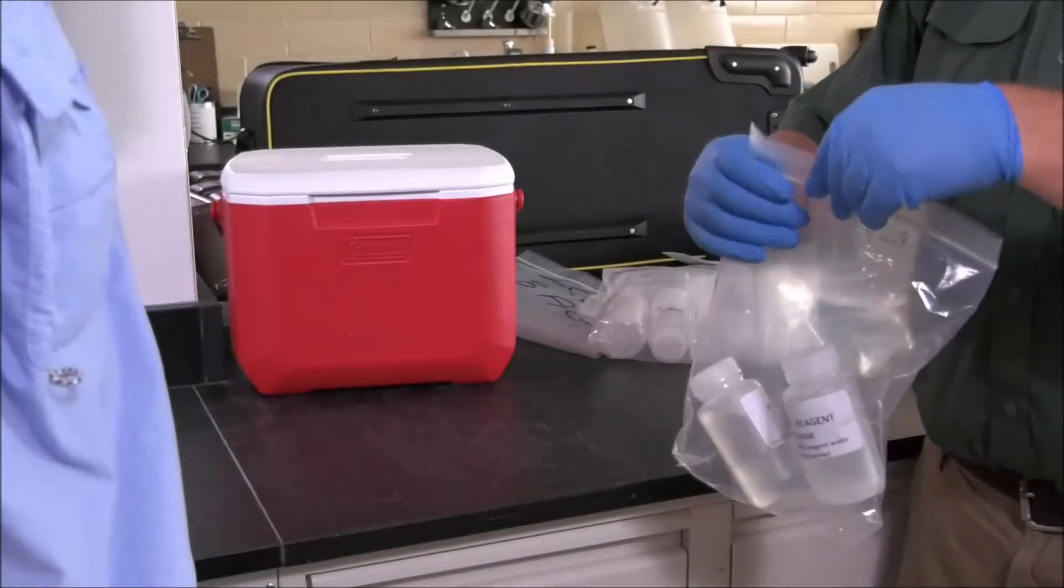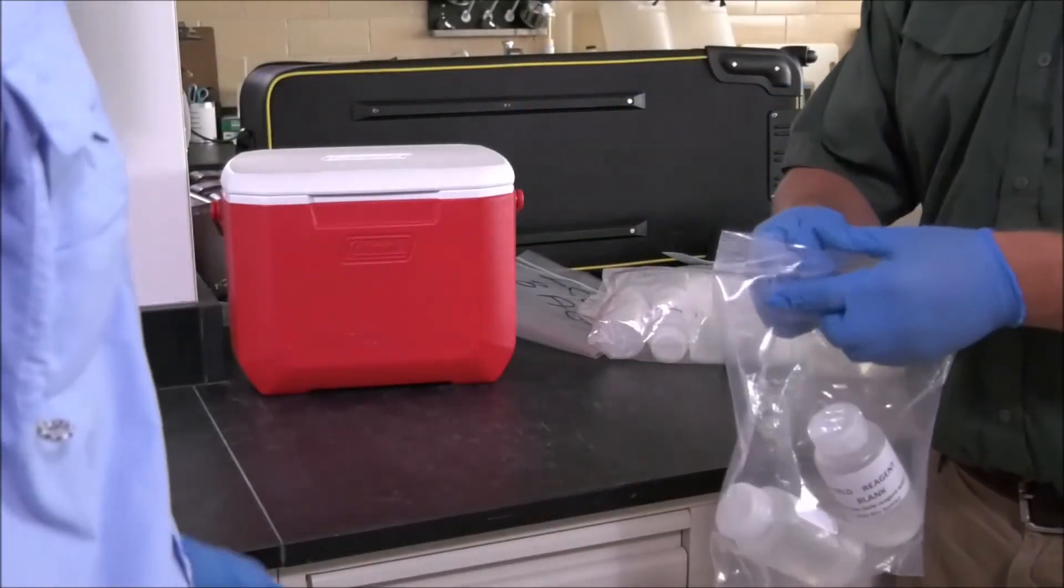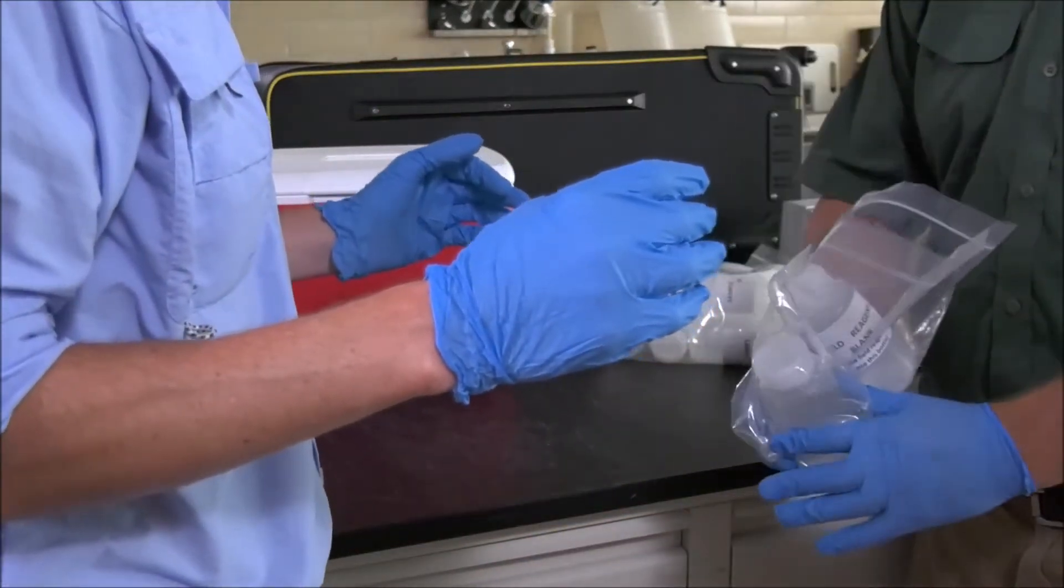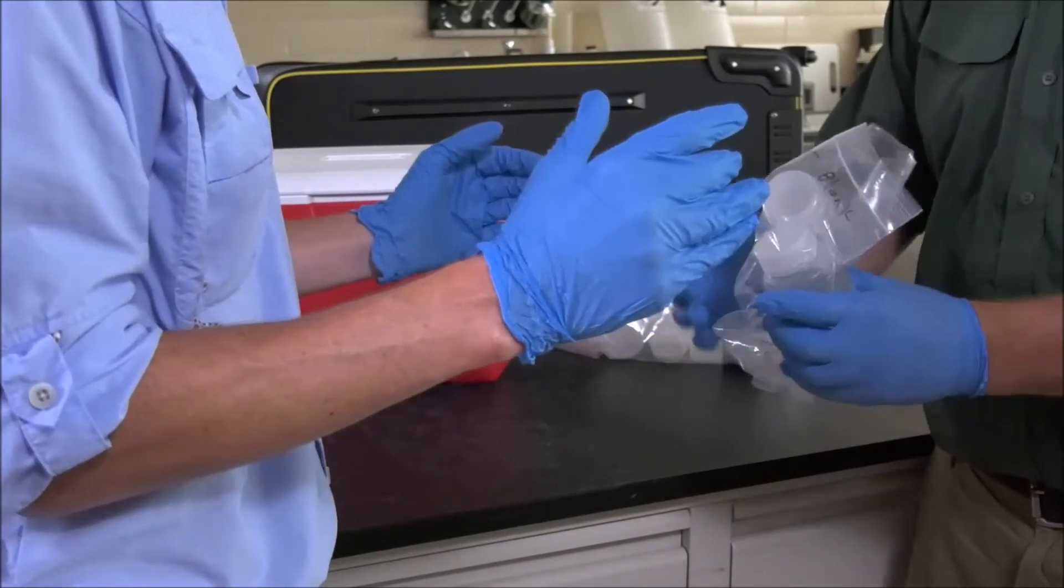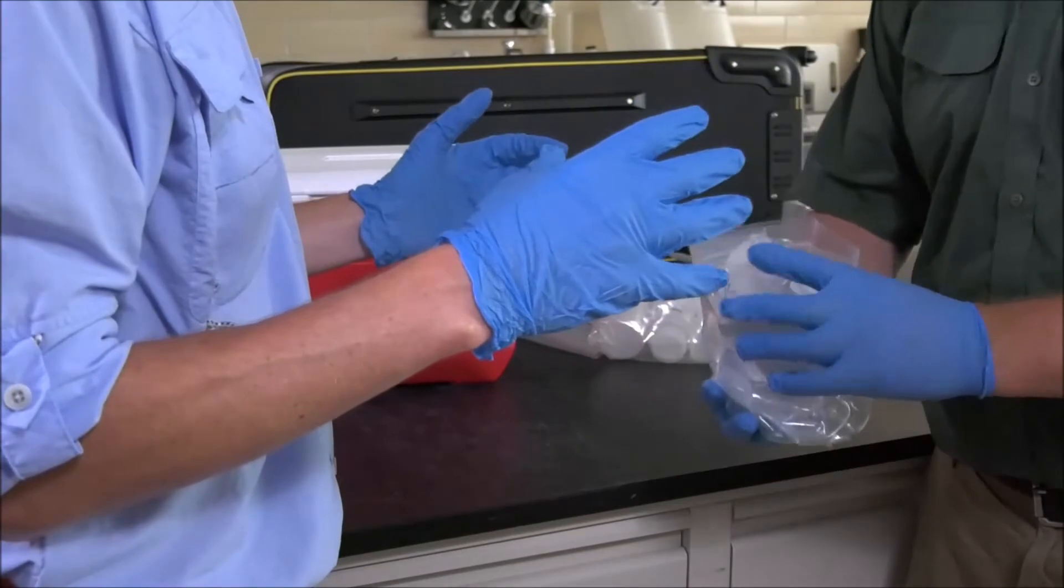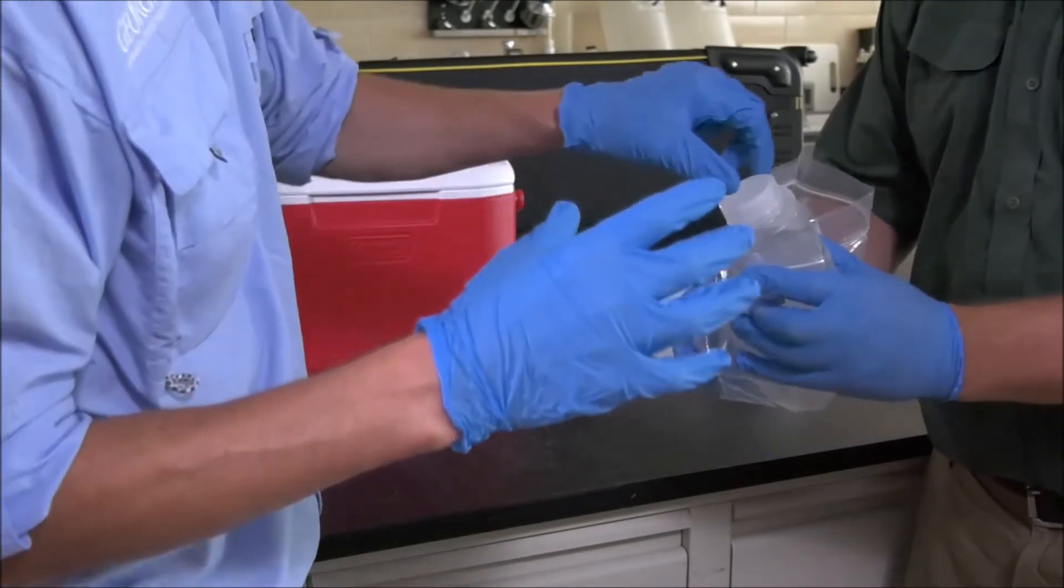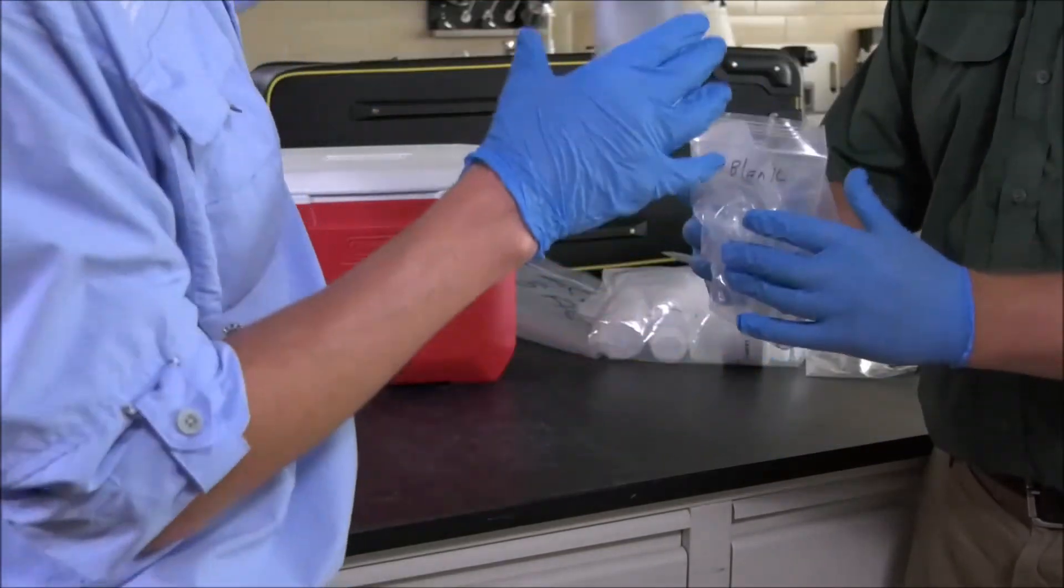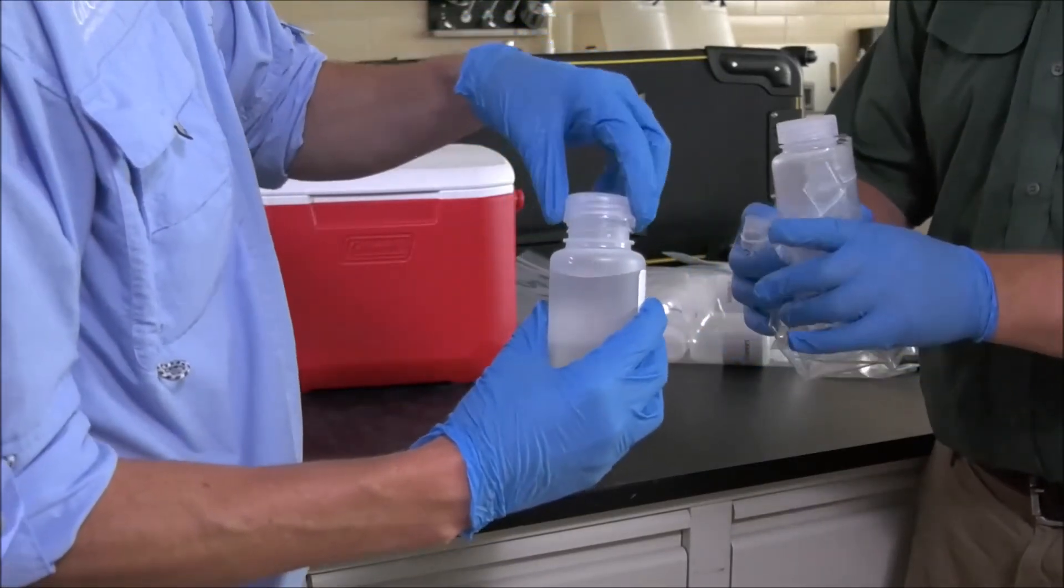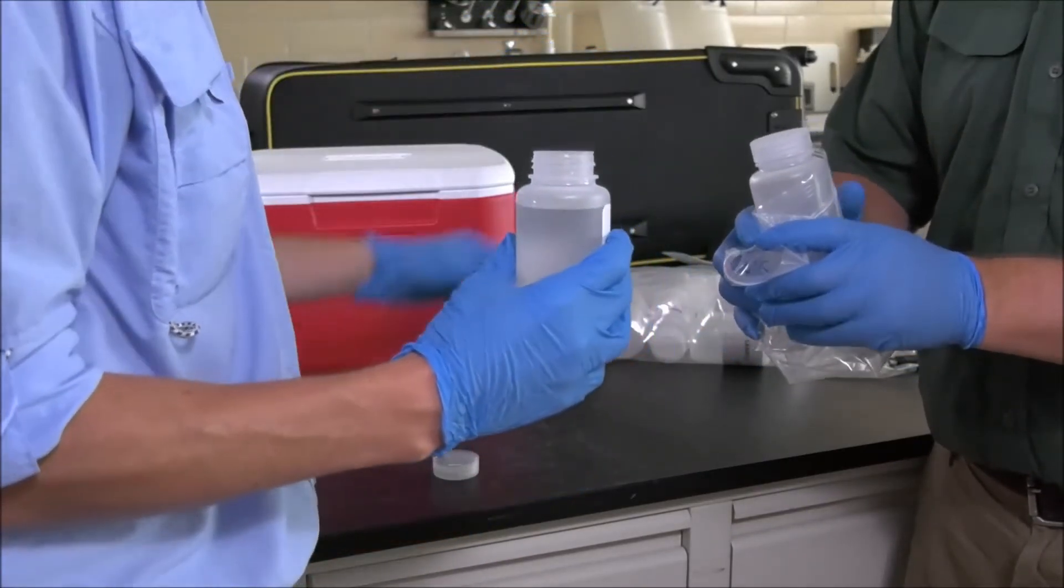Dirty hands removes one of the plastic bags containing field blank bottles from the cooler. Without touching the bottles, dirty hands will move the sample bottles to the opening using the outside of the plastic bag. Clean hands will remove a full field blank bottle from the plastic bag by touching only the cap of the bottle. They will remove the cap from the field blank bottle filled with water. This cap may be placed on the counter.